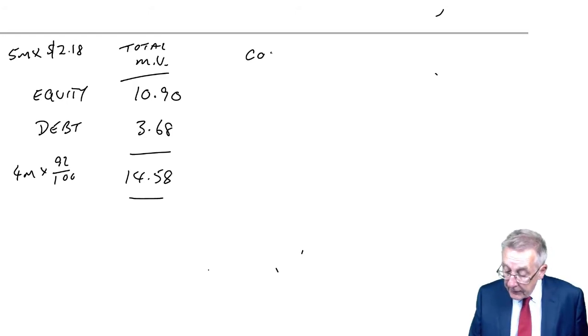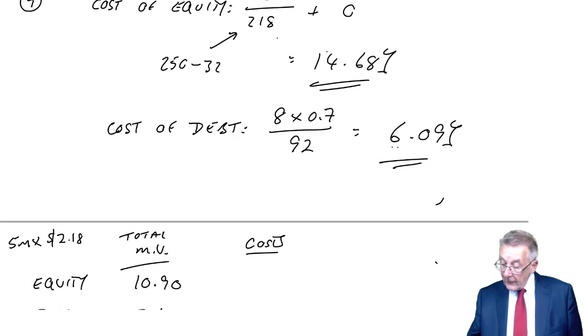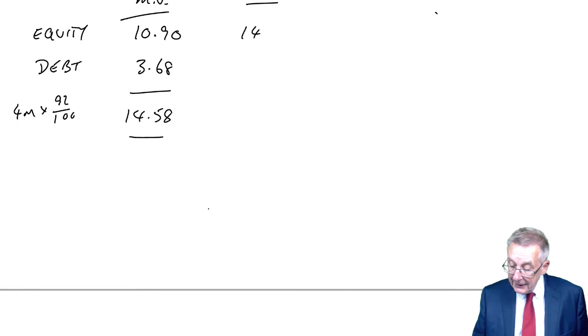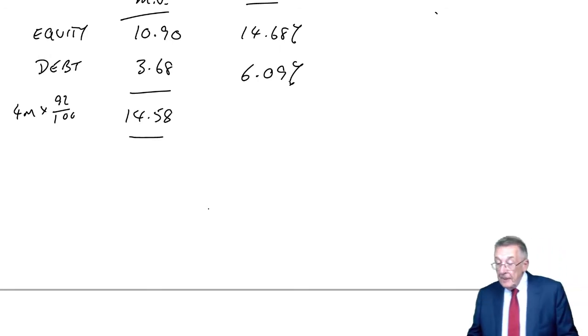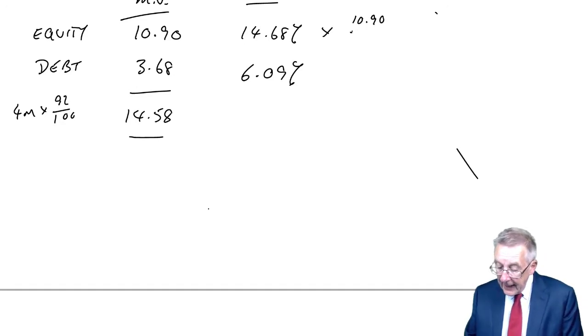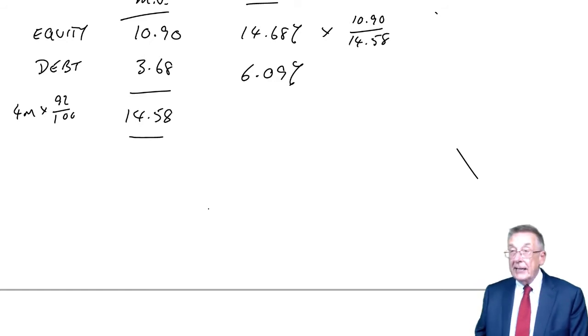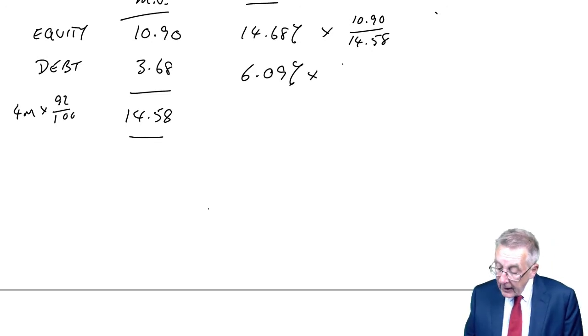And so the total market value of the company, debt plus equity, is 14.58 million. We know the individual costs, we've just calculated them. 14.68 and 6.09. Well, to get the average, we take a weighted average, but we weight by the total ex div ex interest market values. So equity multiplied by equity is 10.9 out of a total market value of 14.58. Whereas debt, 3.68 again, out of a total of 14.58.